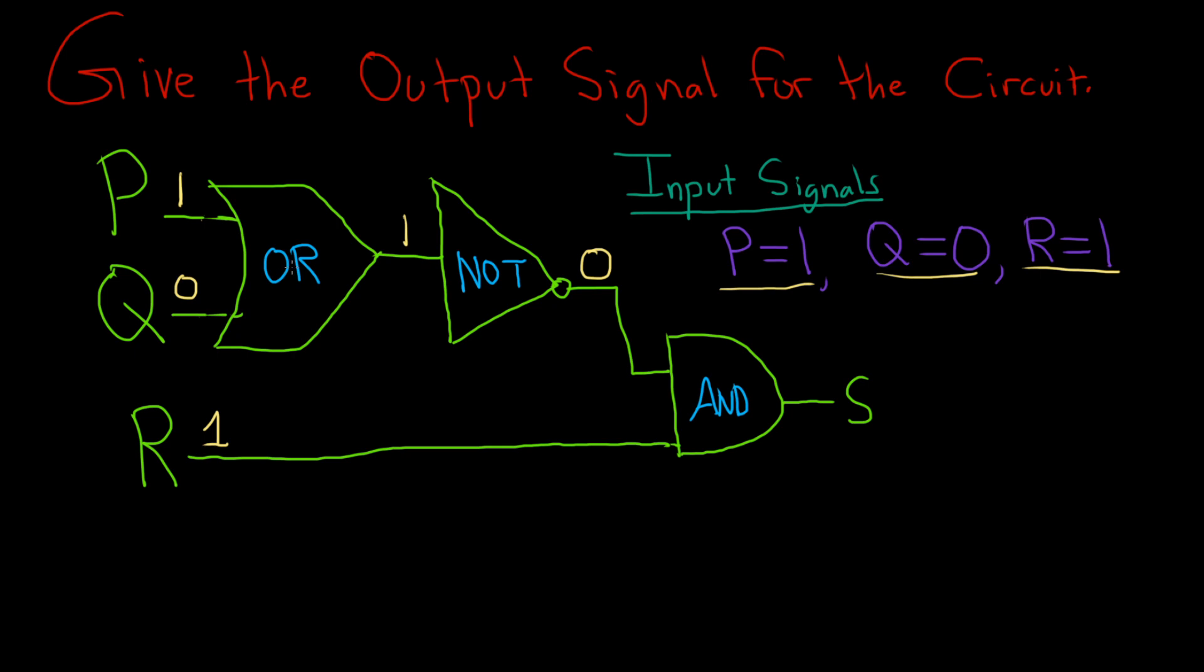You have 1 and 0 entering your OR gate, so that means P is true and Q is false. So if at least one of them is true, you get a true result, so you end up with a 1 again.